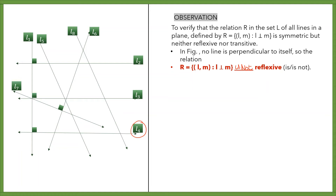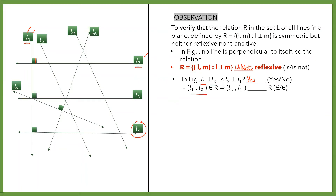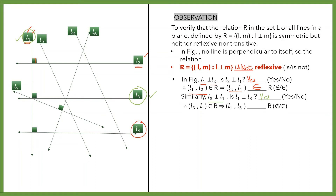To verify the symmetric part, take two perpendicular lines. First, take L1 and L2: L1 is perpendicular to L2. Can we say L2 is perpendicular to L1? Yes, it is. So L1 is related to L2 and L2 is related to L1. Take another example: L3 and L1. L3 is perpendicular to L1, and yes, L1 is also perpendicular to L3. So L3 is related to L1 and L1 is related to L3.